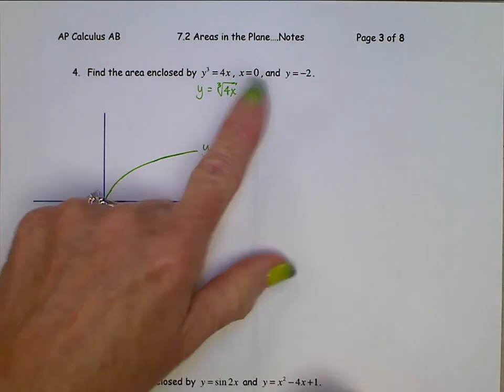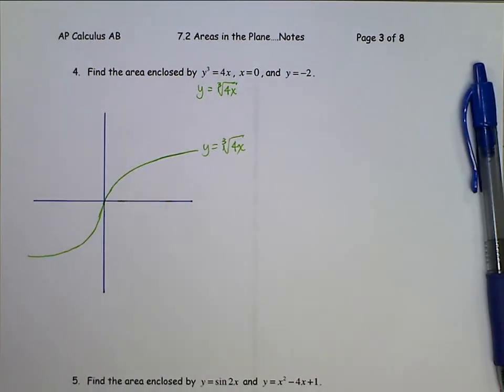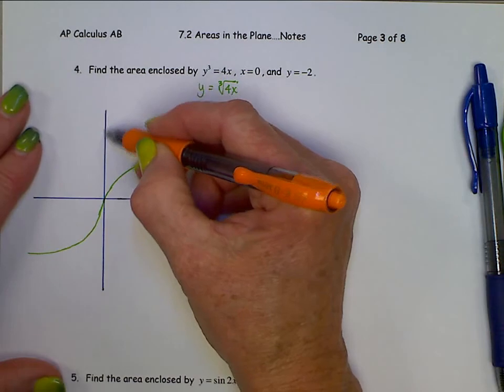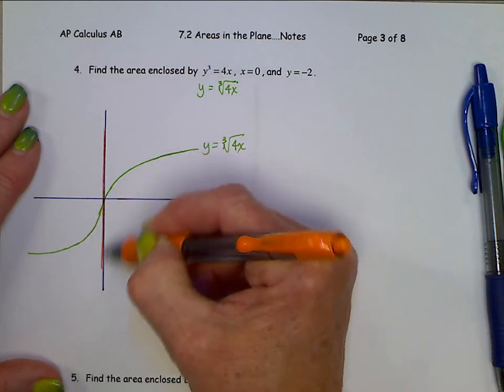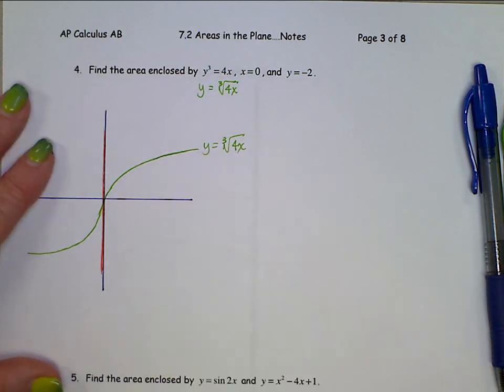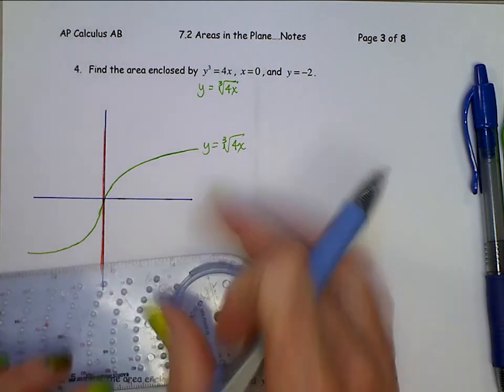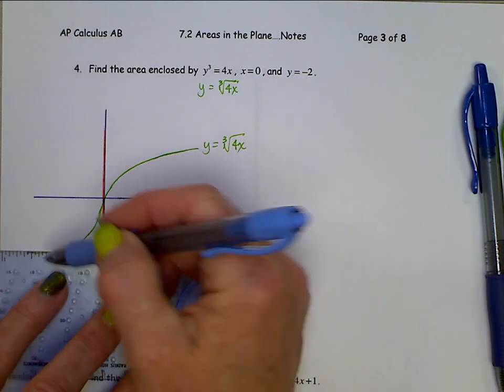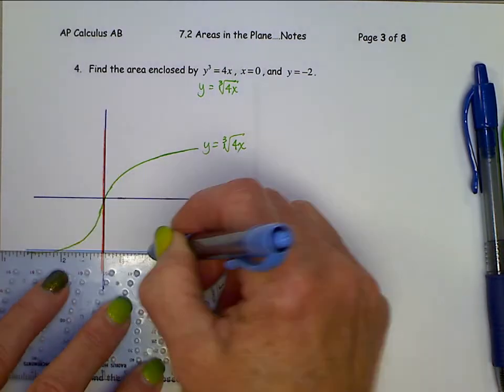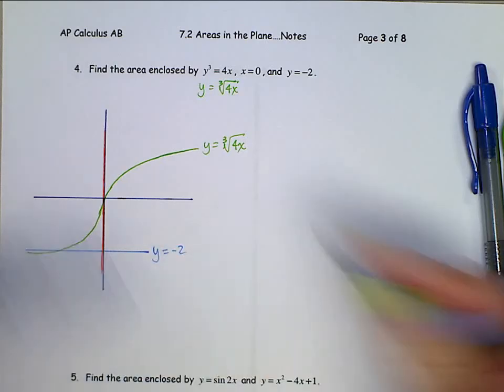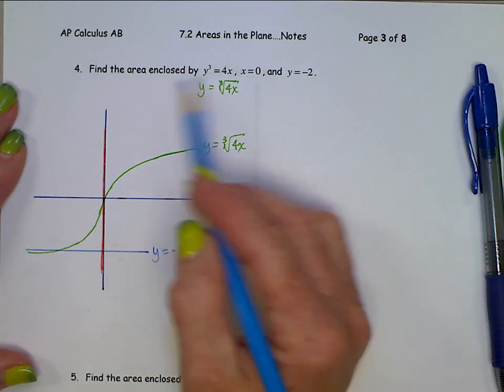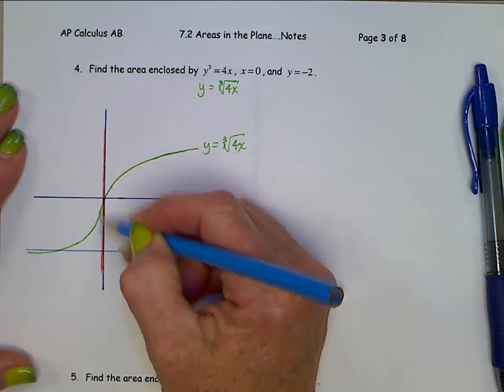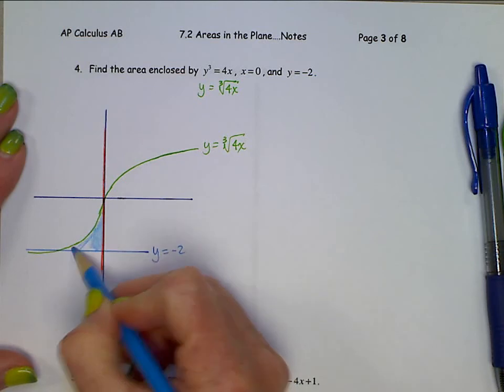Okay, x equals 0. That is the y-axis. Here's x equals 0. And then we also want y equals negative 2, roughly here. Here's y equals negative 2.